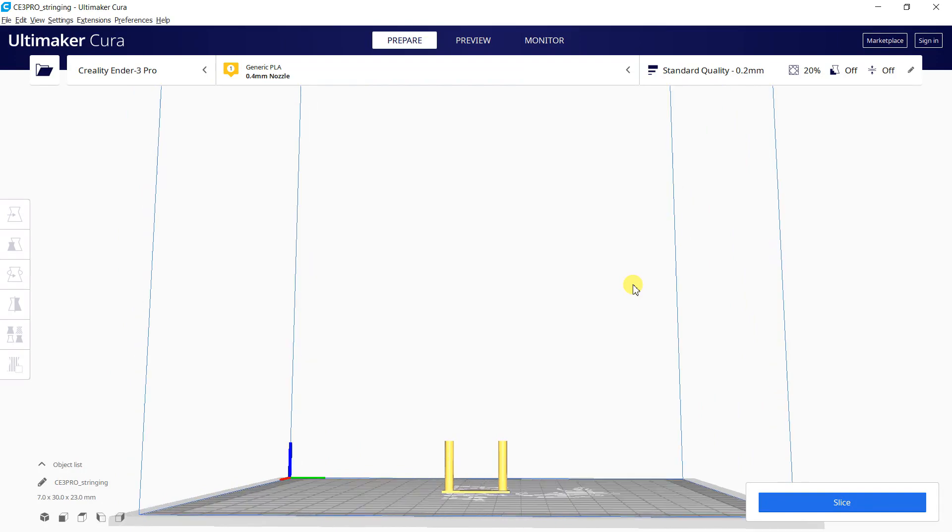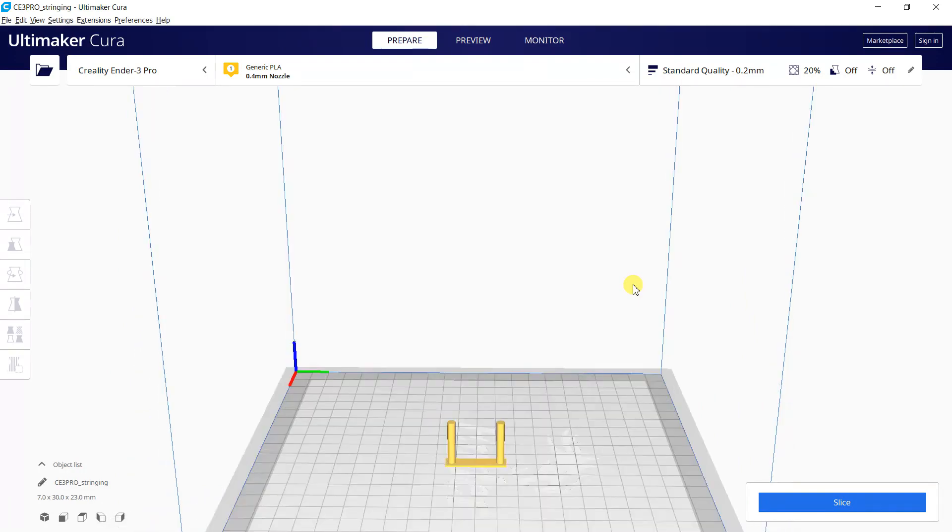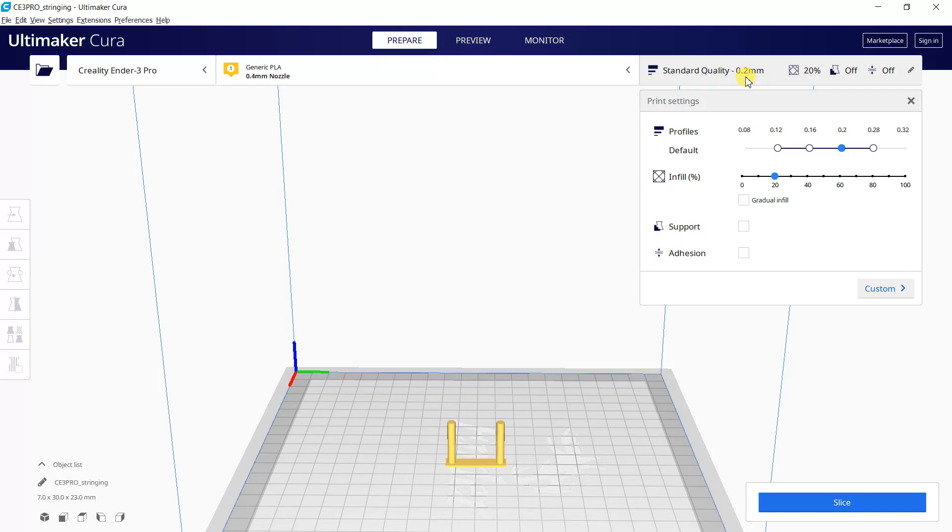I'm using this smaller base stringing test file. I used the standard quality setting. The infill is set to 20% and the layer height is 0.2 mm.